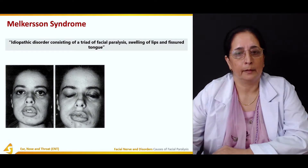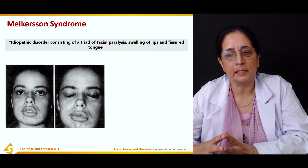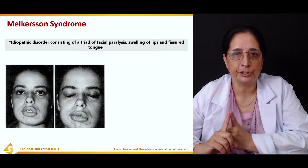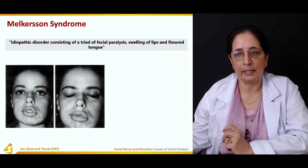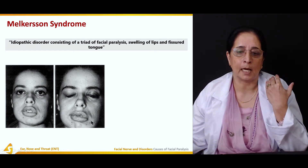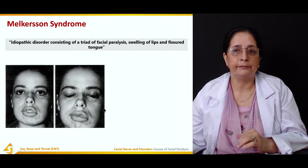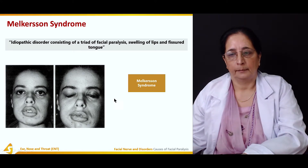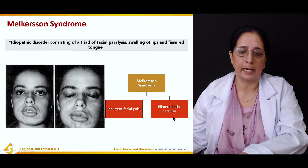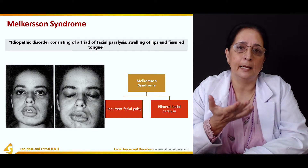Melkerson syndrome is again an idiopathic disorder like Bell's palsy, but it consists of a triad: facial paralysis, swelling of the lips, and fissured tongue. In Melkerson syndrome, there is recurrent facial palsy and it can be bilateral facial paralysis, unlike Bell's palsy which is typically unilateral.